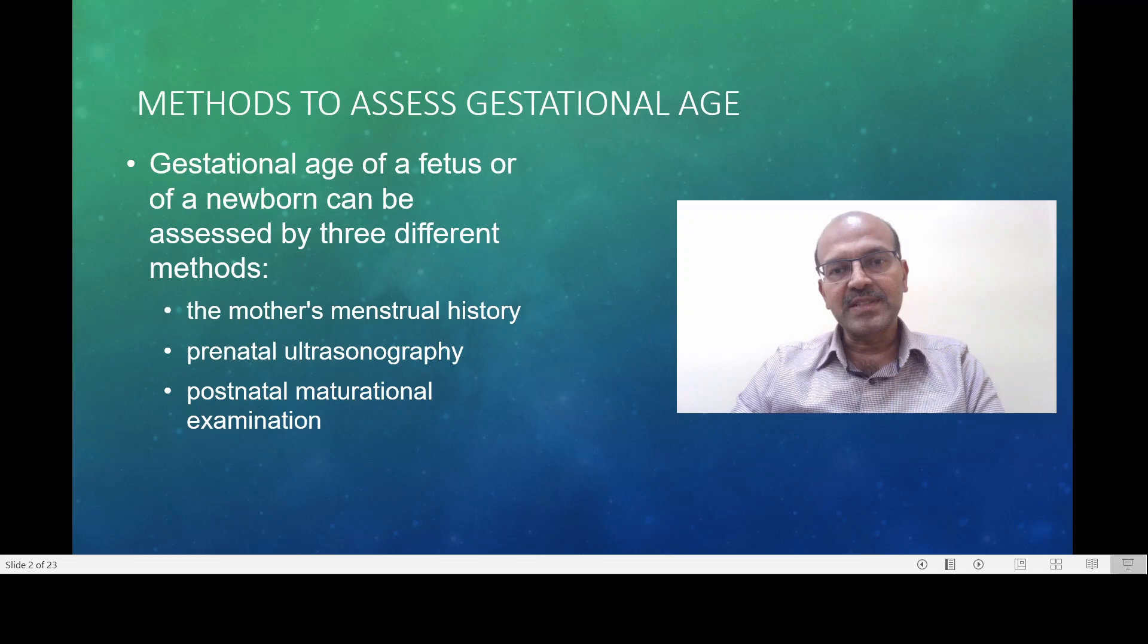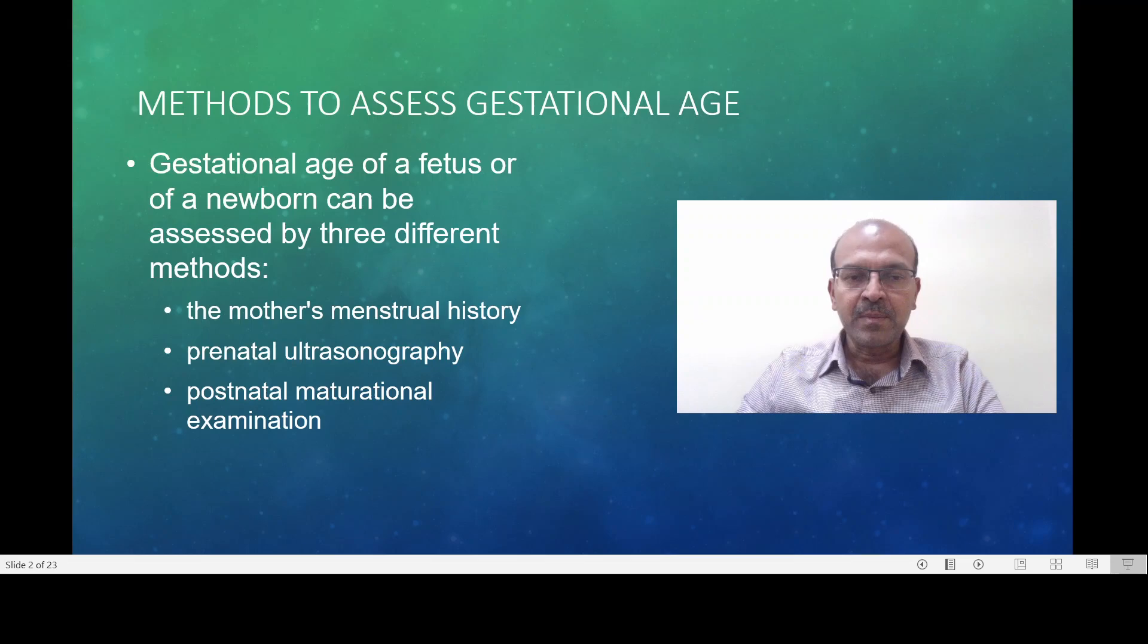There are many methods to assess the gestational age of a premature baby. The most important and most commonly used one is a mother's menstrual history based on the last menstrual period. This can be complicated because sometimes the mother is not sure about the period dates, the cycles may not be regular, and this complicates the issues.